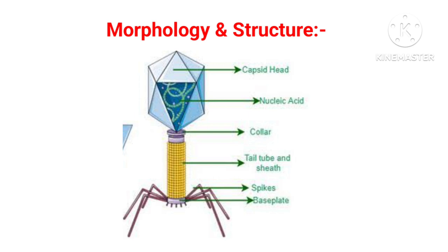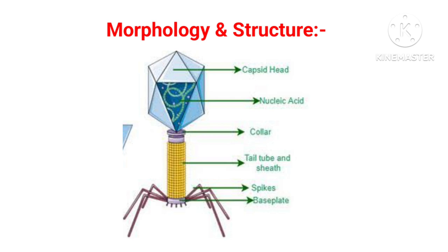They possess only one type of nucleic acid, either it could be DNA or RNA. And these Bacteriophages play a very important role in the transmission of genetic information. We all know that these phages have been used as cloning vectors in genetic manipulation.